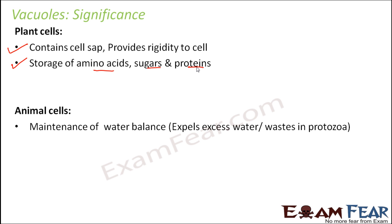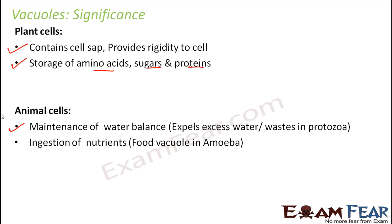In animal cells, vacuoles help in maintenance of water balance by expelling out excess water, and they help maintain osmoregulation and throw out waste materials from the body. They also help in ingestion of nutrients — for example, in amoeba we have food vacuoles that help in intake of food. In animal cells, vacuoles are present only in those animals where there is no other mechanism for food intake or water balance maintenance, such as amoeba and paramecium.